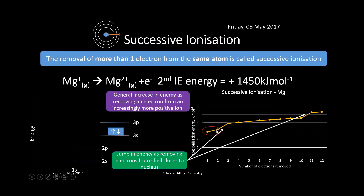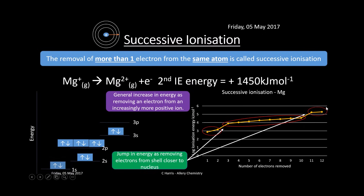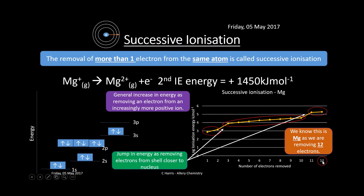Looking at where each electron comes from: the first two electrons sit in the 3s orbital, furthest from the nucleus. Then we move to the second shell — six in the 3p and two in the 3s. Removing electrons from the first shell, closest to the nucleus, requires significantly more energy — you need to explain these jumps in the exam. From this data we can identify the element: 12 electrons means this is magnesium.